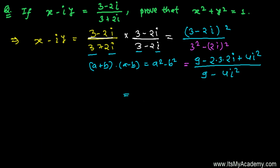It's 9 minus 2×3×2, so it's 12i, and i² is -1, so -1 will multiply this 4, so you will get -4. Similarly in the denominator, it's 9-4, but i² is -1, so that's why it's going to be plus. So now it's going to be 9-4.